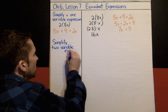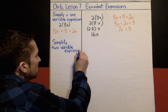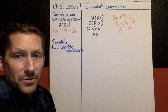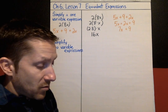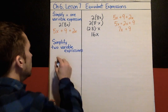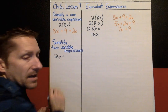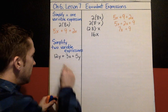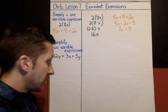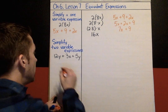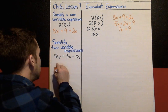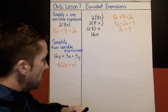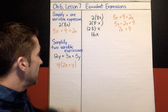Simplify two-variable expressions — I should say expressions, not equations. I've got two more examples. The first is 12y plus 3x plus 5y. This expression has two variables: x and y. The second example is 4 times the quantity 2x plus y.